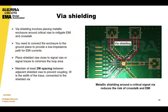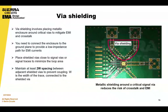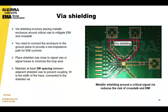Via shielding is also a good technique. You're basically enclosing around critical vias to mitigate EMI and crosstalk and to provide a low impedance path for EMI currents — connect the metallic enclosures to a ground plane to help dissipate unwanted electromagnetic energy. When placing shields around signal vias or traces, minimize the loop area to reduce EMI and crosstalk. To prevent unintended coupling effects, avoid contact between the shields and adjacent vias, and maintain a minimum spacing of 2W between shielded vias.